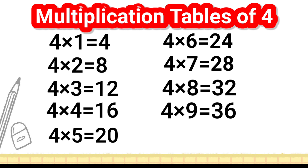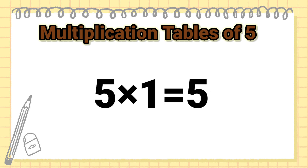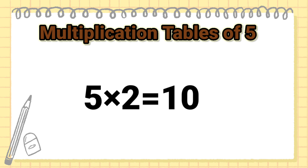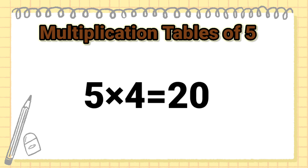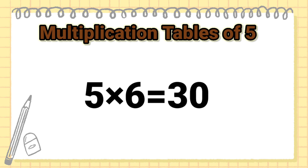Multiplication Table of 5. 5 1's are 5, 5 2's are 10, 5 3's are 15, 5 4's are 20, 5 5's are 25, 5 6's are 30.